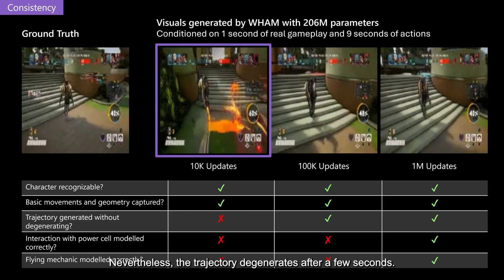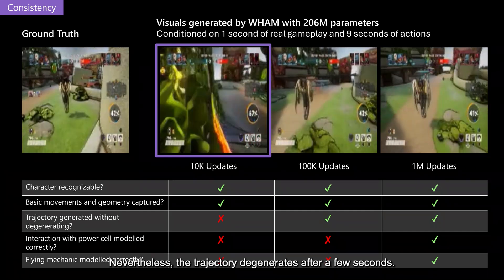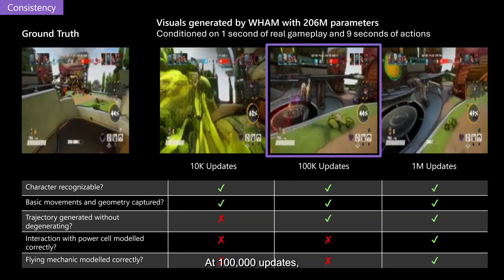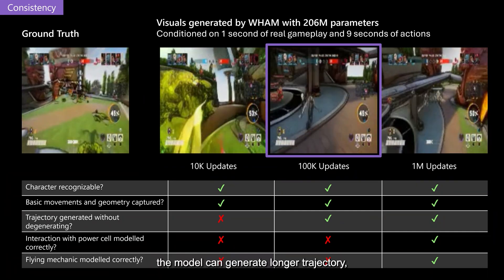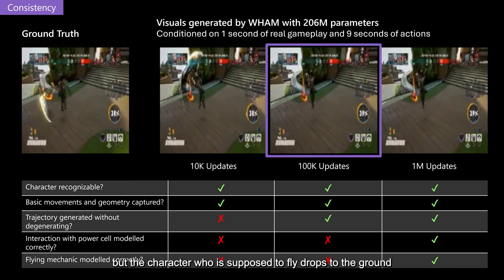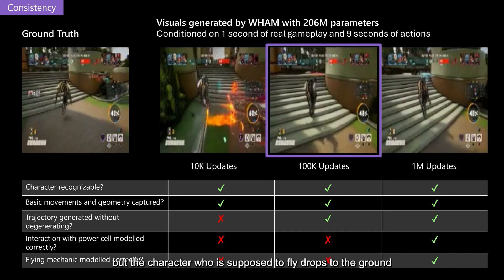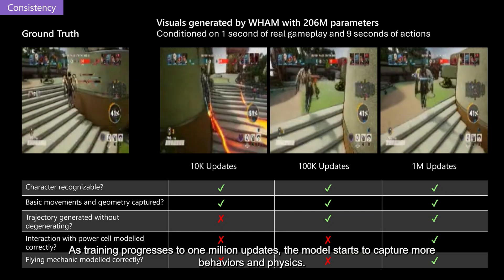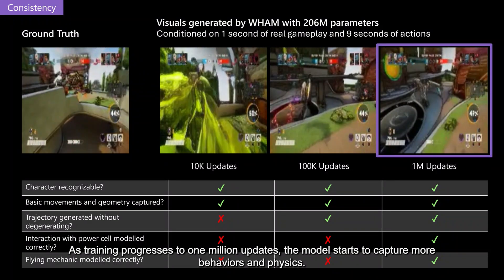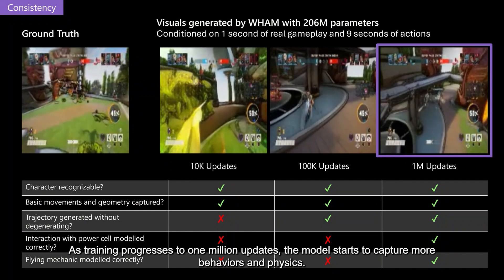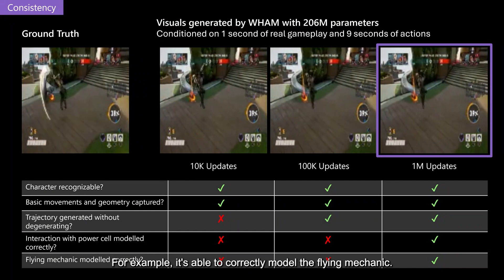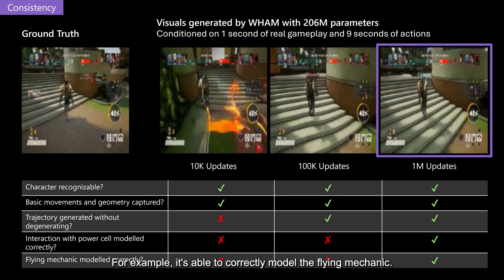Nevertheless, the trajectory degenerates after a few seconds. At 100,000 updates, the model can generate longer trajectories, but the character who is supposed to fly drops to the ground. As training progresses to 1 million updates, the model starts to capture more behaviors and physics. For example, it's able to correctly model the flying mechanic.